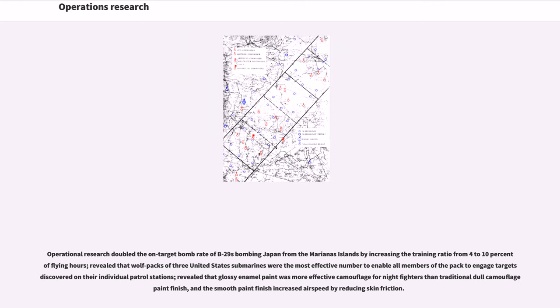Operational research doubled the on-target bomb rate of B-29s bombing Japan from the Mariana Islands by increasing the training ratio from 4 to 10 percent of flying hours, revealed that wolf packs of three United States submarines were the most effective number to enable all members of the pack to engage targets discovered on their individual patrol stations, revealed that glossy enamel paint was more effective camouflage for night fighters than traditional dull camouflage paint finish, and the smooth paint finish increased air speed by reducing skin friction.